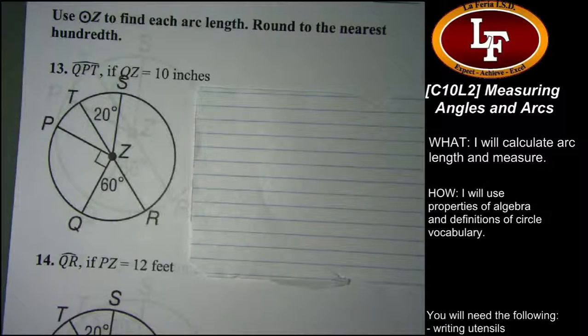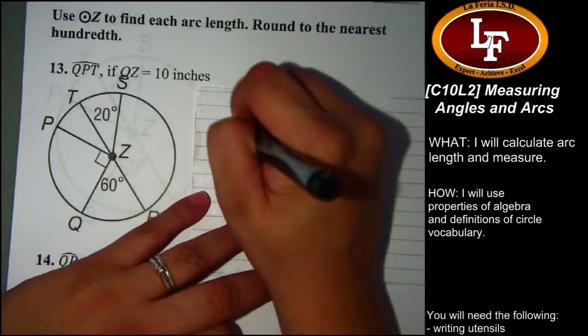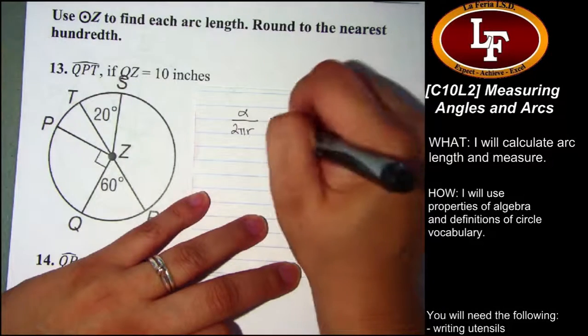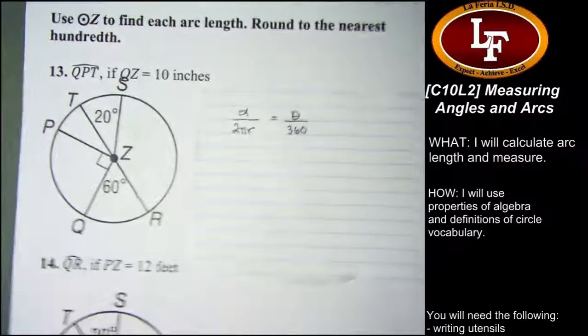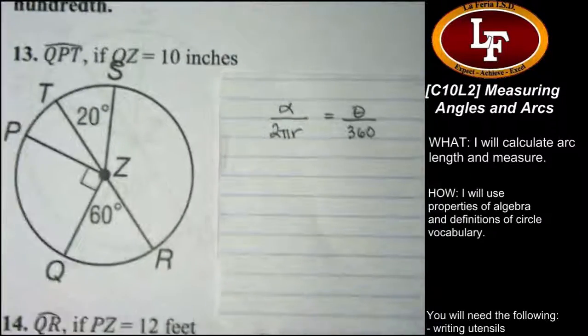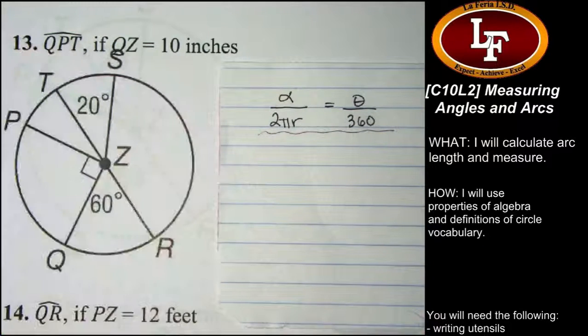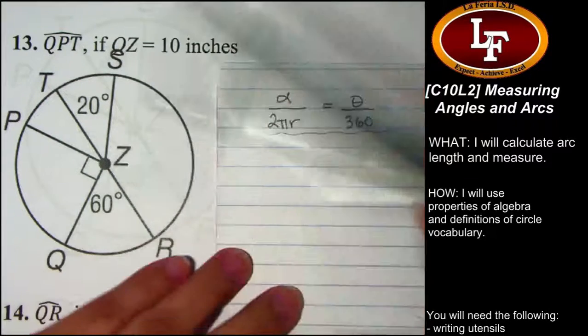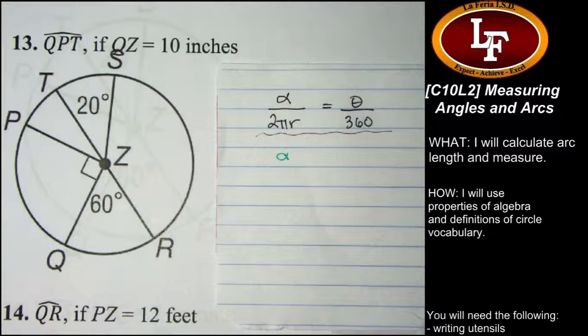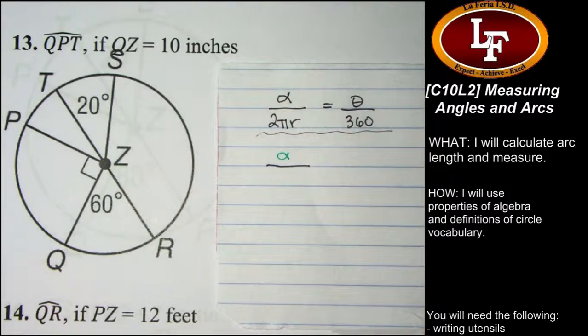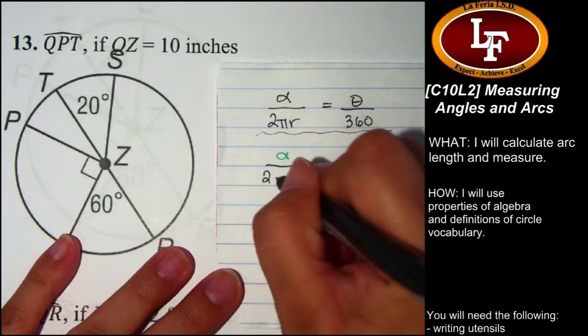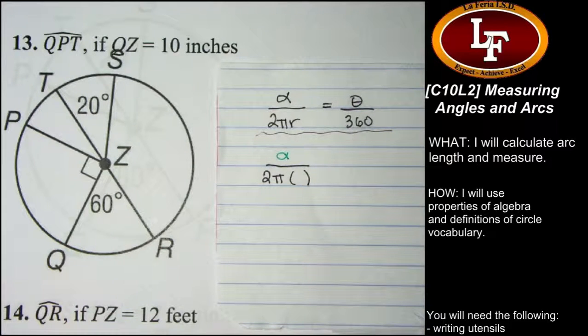Here's my formula written as a proportion: arc length divided by circumference equals measure of central angle that creates the arc divided by 360. That formula is going to get used on this particular section. Arc length over circumference equals central angle measure over 360. The arc length is what I'm trying to find, so I need to find the circumference of the circle, which is 2πr.